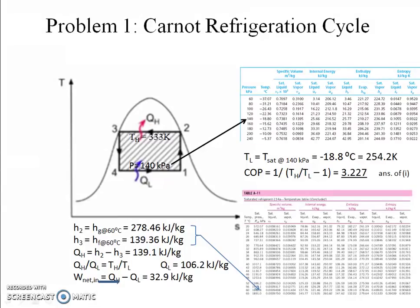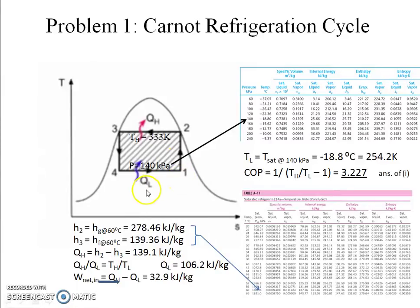On a T-S diagram, a Carnot cycle has two reversible adiabatics shown as vertical lines. Process 1 to 2 is reversible adiabatic compression, and process 3 to 4 is reversible adiabatic expansion. Process 2 to 3 occurs at constant temperature — reversible isothermal compression. Process 4 to 1 is reversible isothermal expansion. The vertical lines correspond to constant entropy. From Clausius's equation, dS = dQ/T, and in an adiabatic process dQ = 0, so dS = 0.